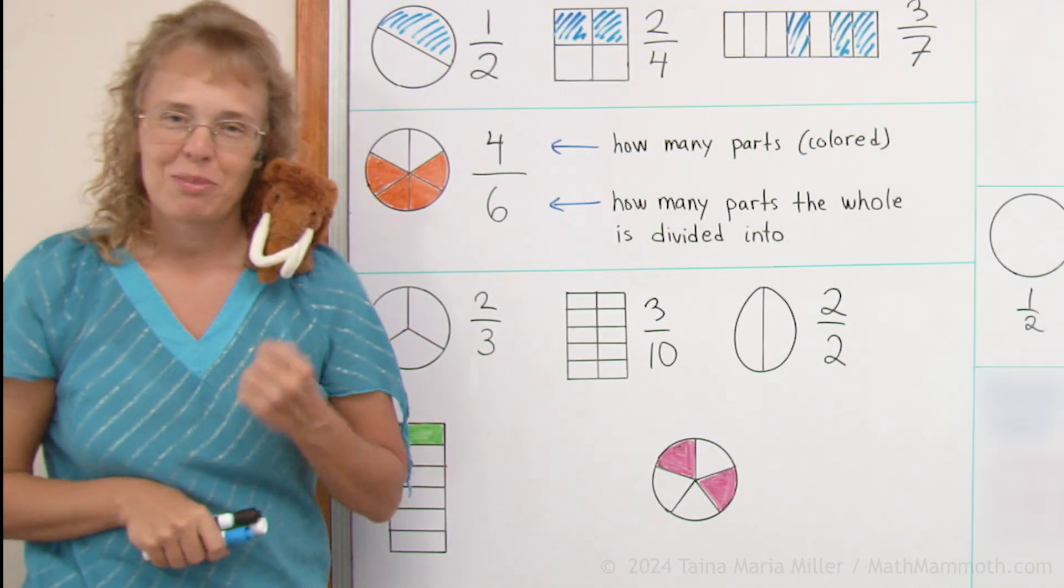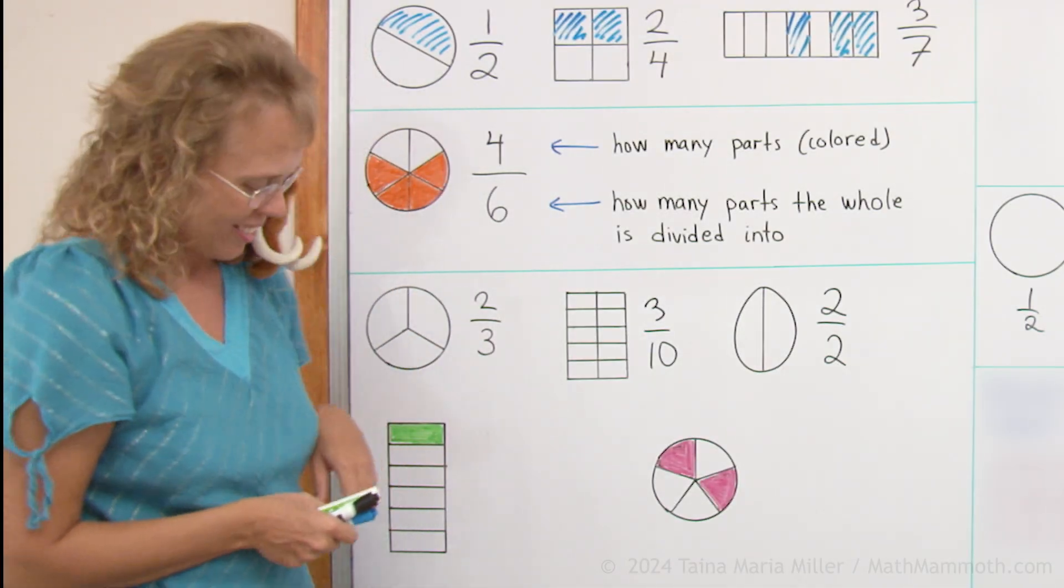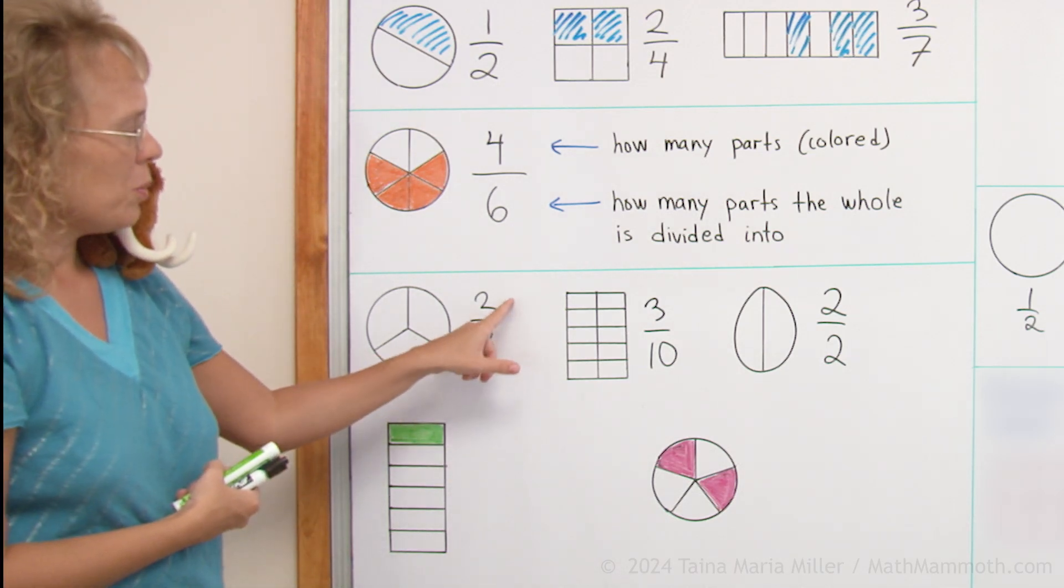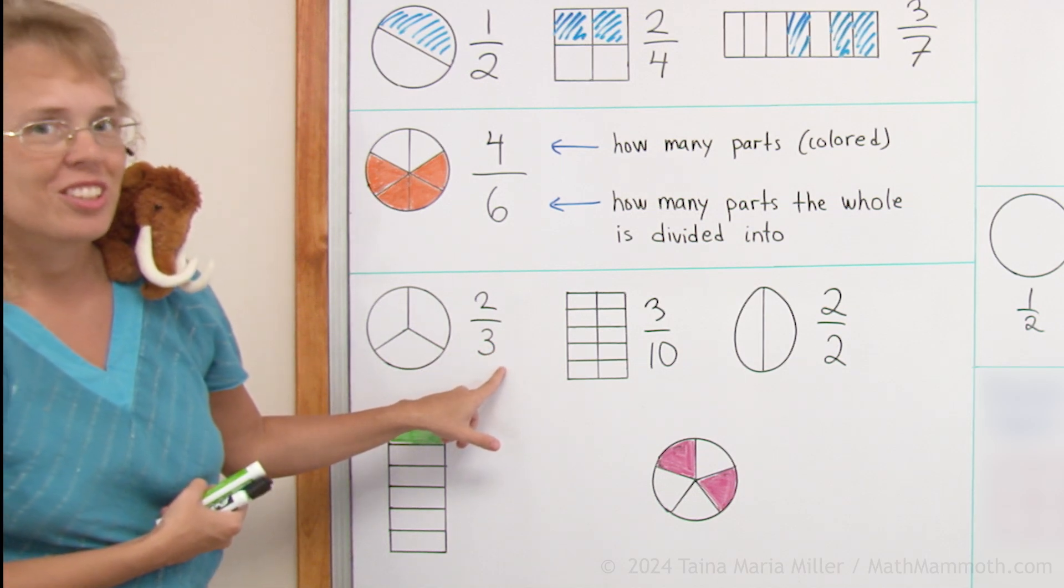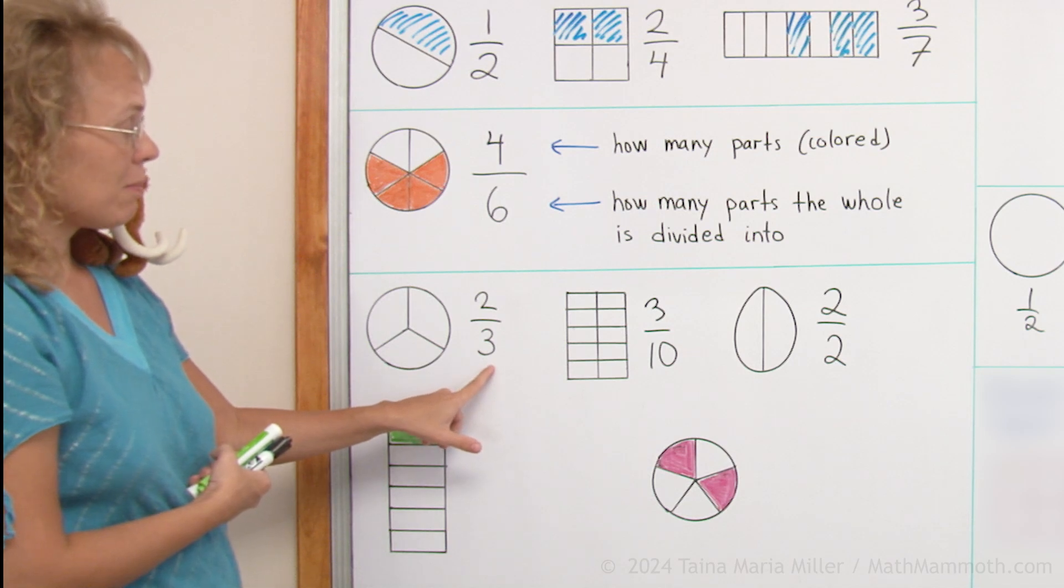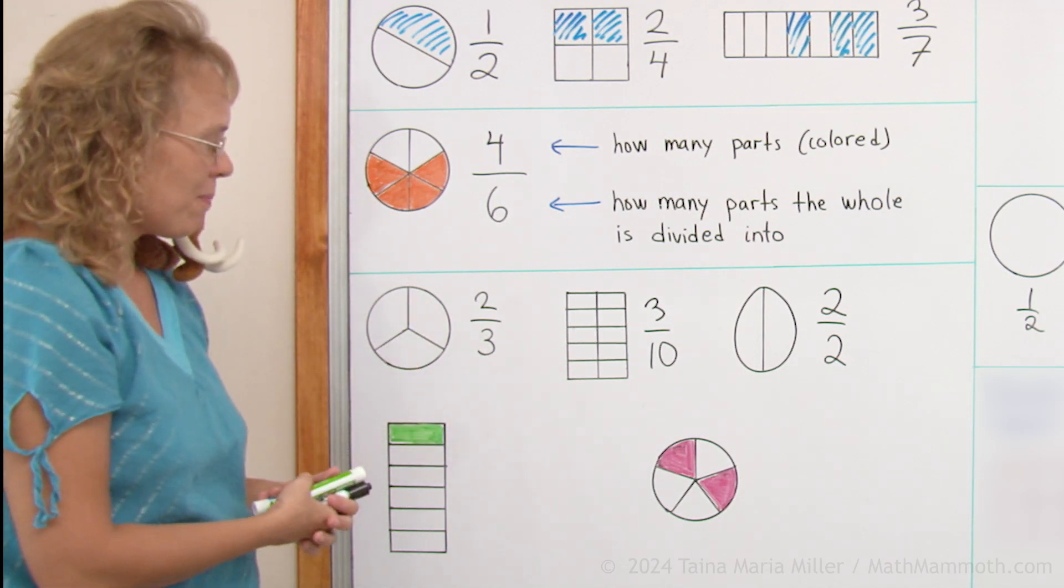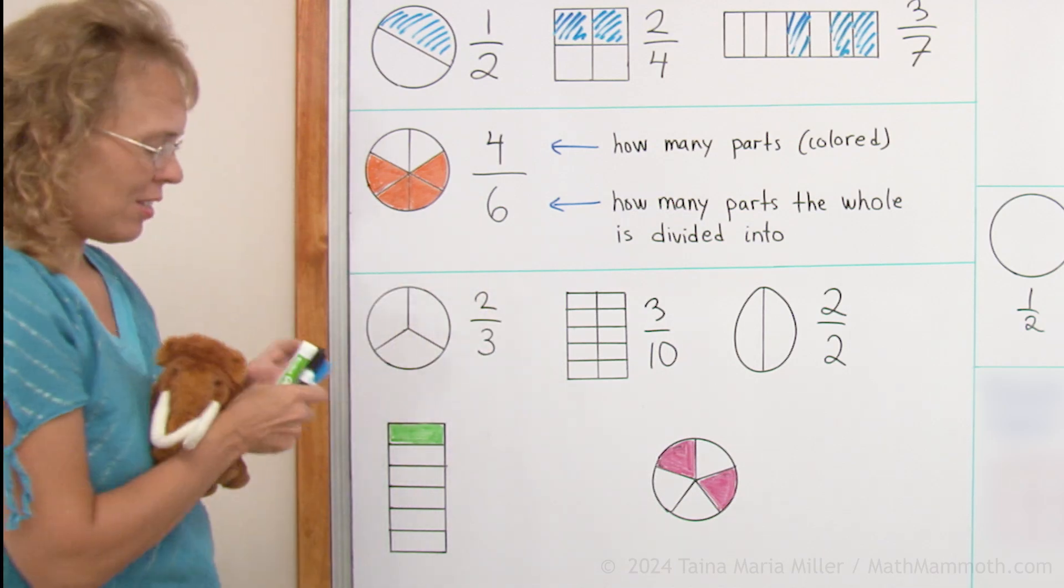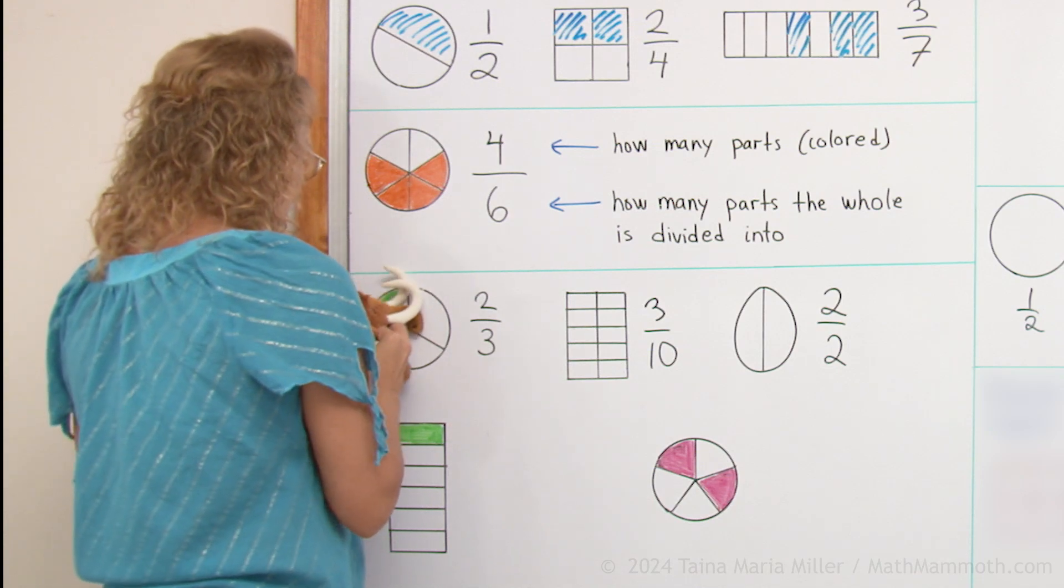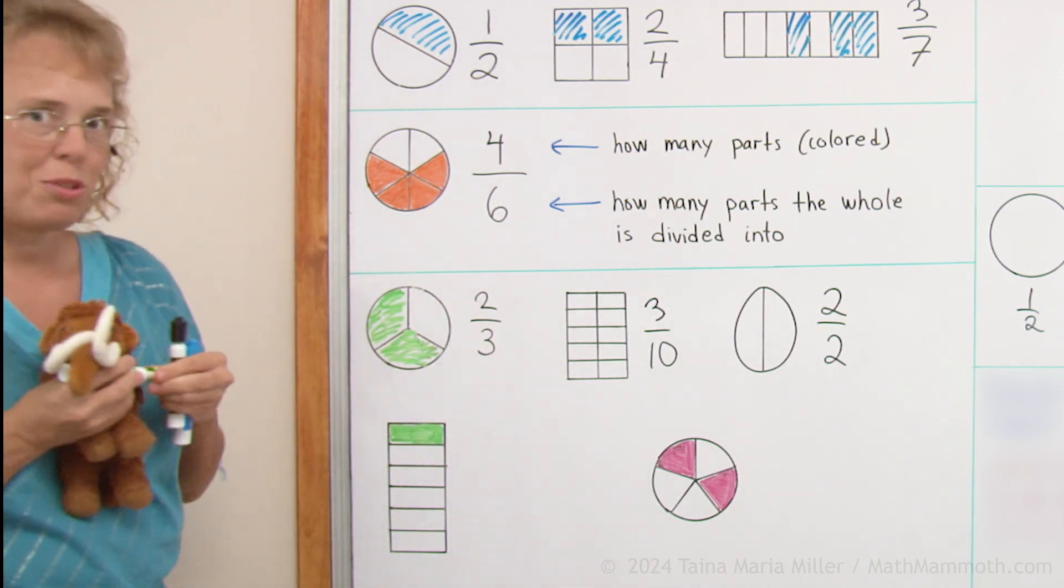And we can do some coloring. Okay, Matthew, are you ready? Do you like coloring too? Sure. Here's the fraction. What fraction is it? Two thirds. Okay. The circle is divided into three parts, three equal parts. And then we're going to color how many? Two parts. Okay, Matthew. Nice job, two thirds.